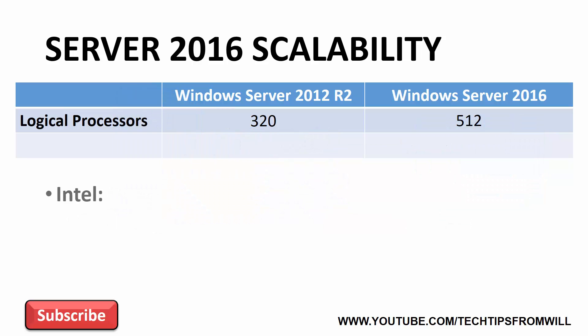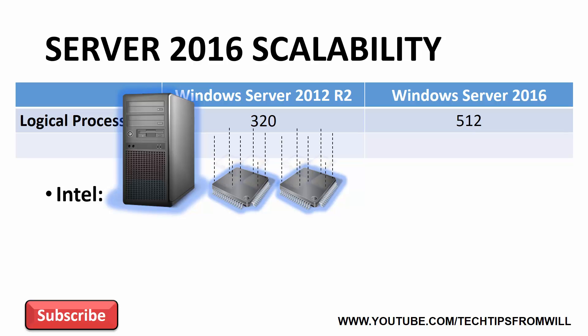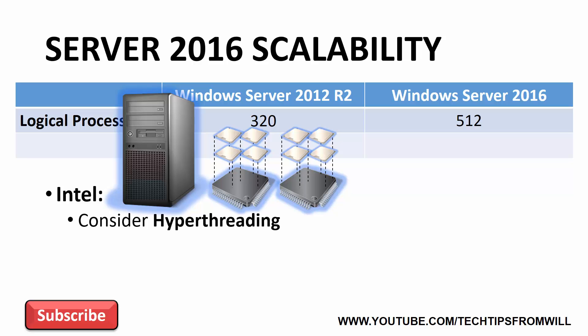Now let's take a look at Intel processors. With Intel processors, there's an extra step involved. Let's consider the same physical server from before. Once again, two physical processors are installed, only this time they're Intel processors. As before, these processors are quad-core processors, meaning the number of cores again adds up to eight. So far, this looks similar to AMD. But with Intel processors, after adding up the number of cores, you then have to consider a feature called Hyper-Threading.